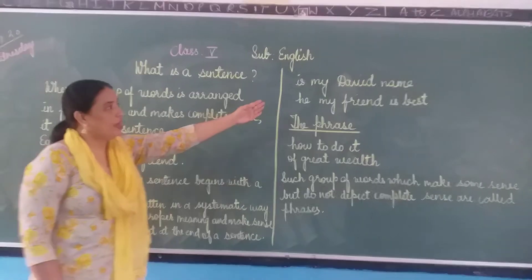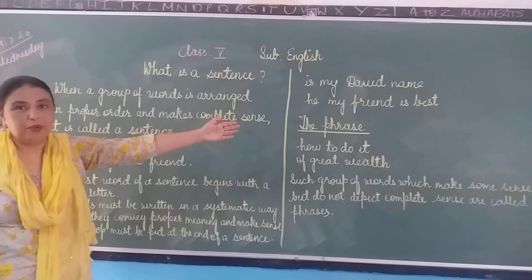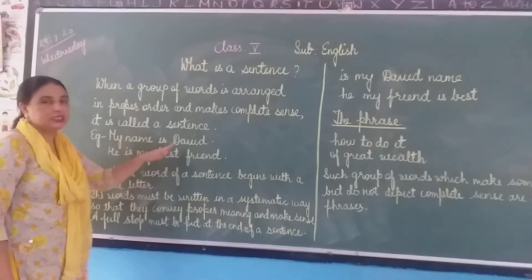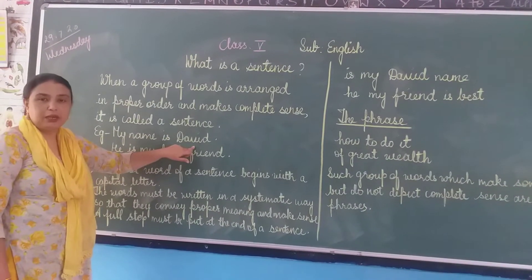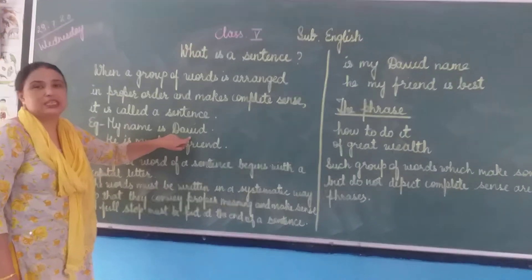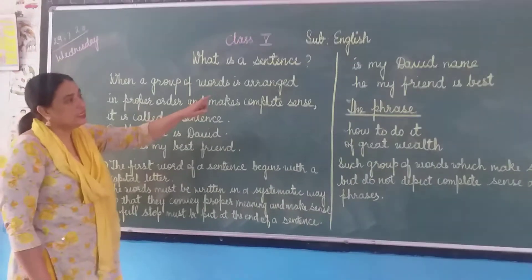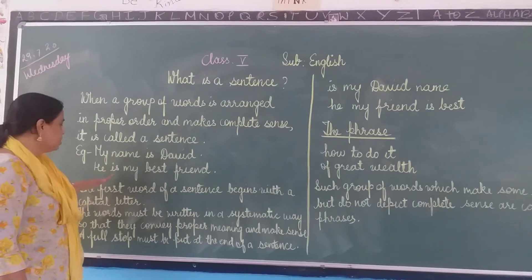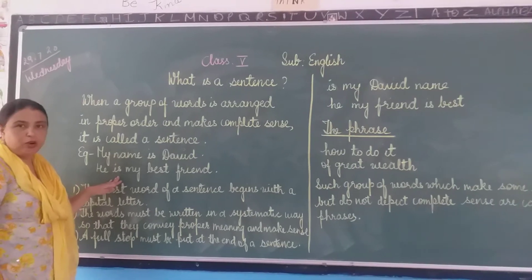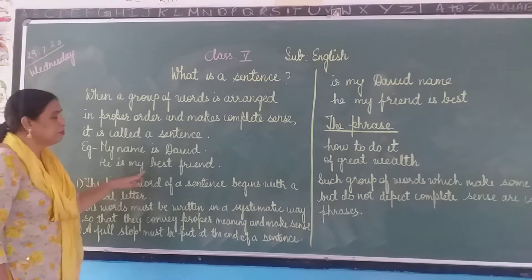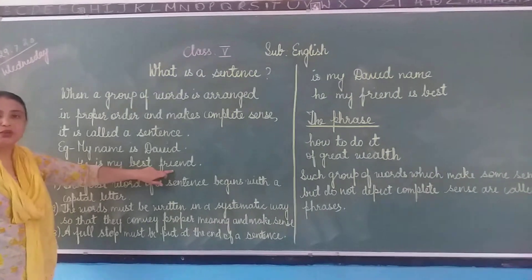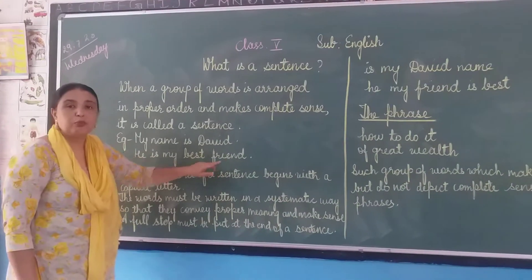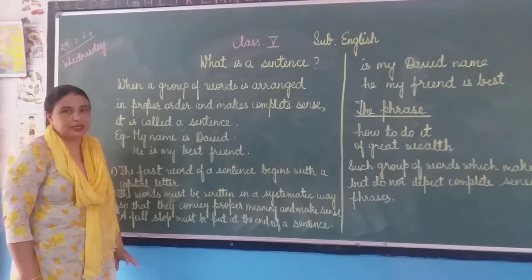Now, the same thing I wrote — 'is my David's name' — if you put it in proper order, like 'My name is David', now this is sounding better and making some sense. So this is a sentence. Again, the second example 'he my friend is best' changes to, when put in proper order, 'He is my best friend.' Now this is giving a complete sense of meaning. So that group of words which gives you a complete sense of meaning is called a sentence.